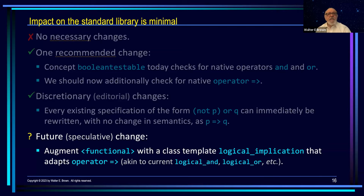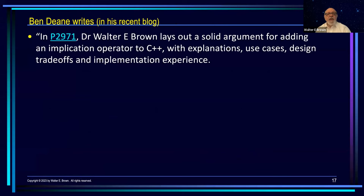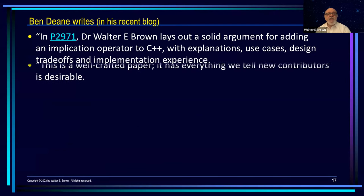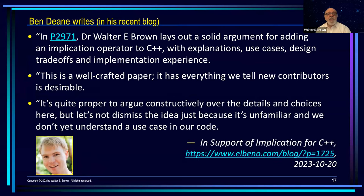Last week, after reading my paper, Ben Dean actually wrote a blog on the subject. Let me quote part of his conclusion: 'Dr. Brown lays out a solid argument for adding an implication operator, with explanations, use cases, design trade-offs, and implementation experience. It's a well-crafted paper — it has everything you tell new contributors is desirable. It's proper to argue constructively over the details and choices here, but let's not dismiss the idea just because it's unfamiliar and we don't yet understand a use case in our code.' I have heard from one or two others who believe we do not need such an operator, but I believe we do.